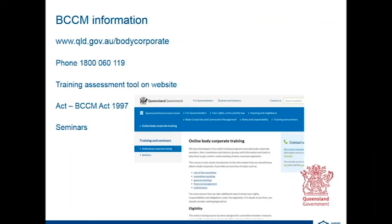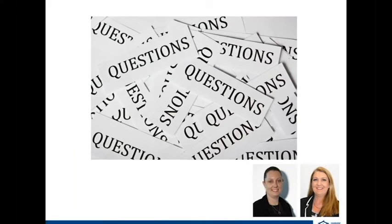Q&A: Do you need body corporate permission to put up a for rent or for sale sign on common areas such as fences and walls in unit complexes? Yes — this is generally covered in the bylaws for the scheme, but any change to common areas will require permission. It doesn't matter whether you're adding or removing something; permission is always necessary from the committee for common areas.